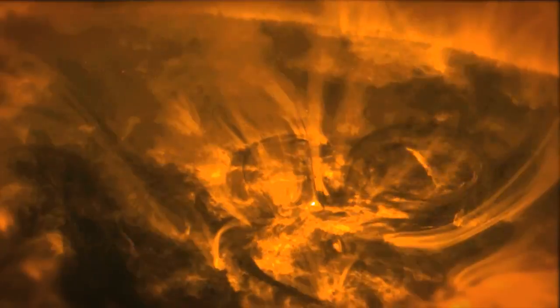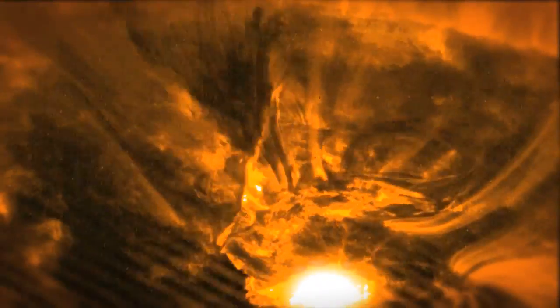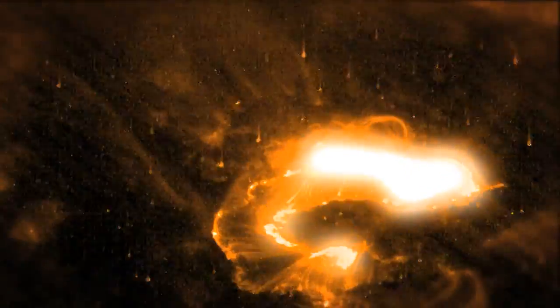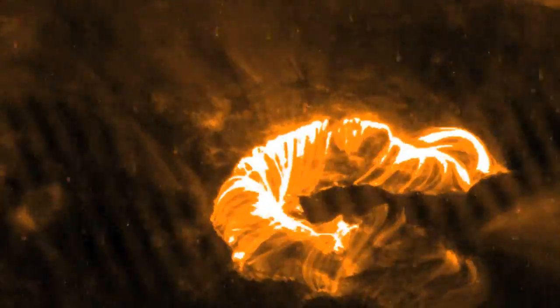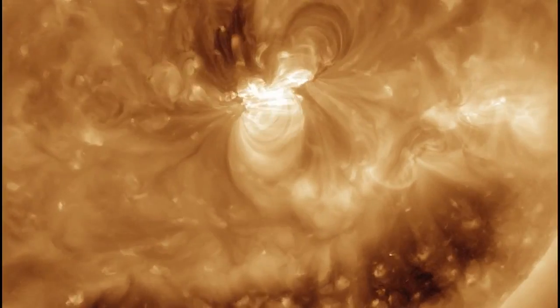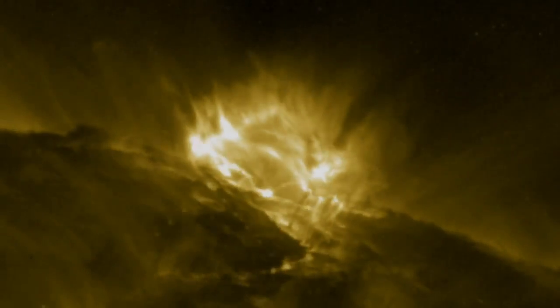So what are these solar eruptions? A solar flare is basically an explosion on the surface of the Sun, ranging from minutes to hours in length. Large flares can release enough energy to power the entire United States for a million years.